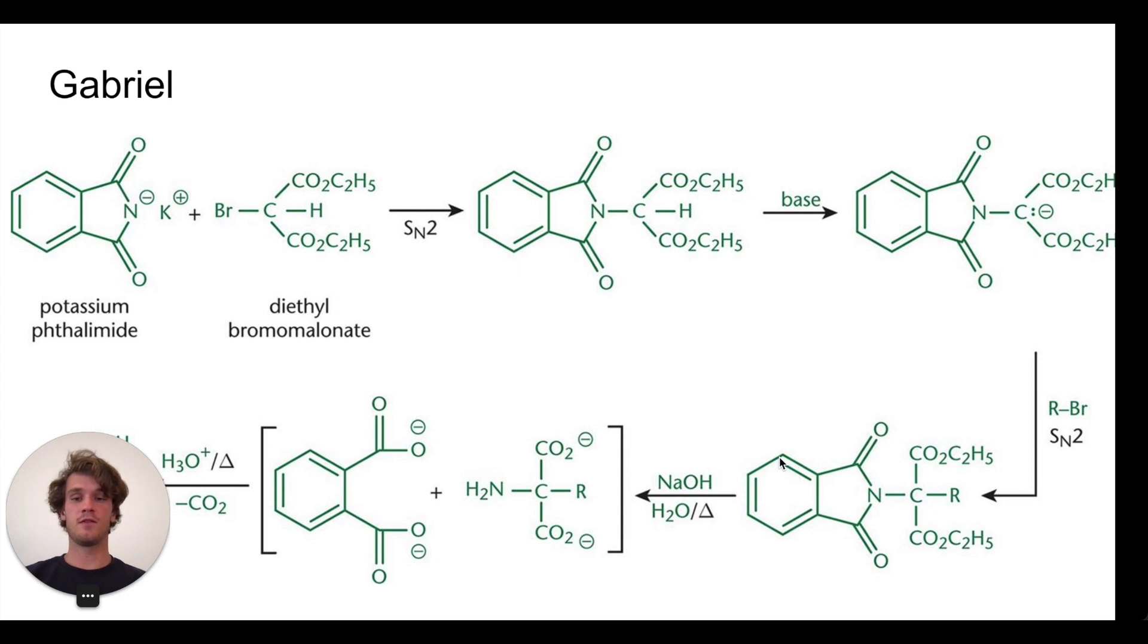Again, it uses crazy complicated mechanisms. But the one thing that's important that we need to know is this step right here. So through an elaborate mechanism, we create a negative charge on a carbon. Again, this is a highly reactive nucleophilic entity. And this is going to attack an alkyl group, an alkyl group specifically that's bound to the R group of our amino acid.